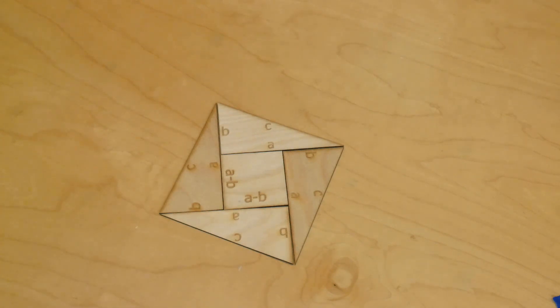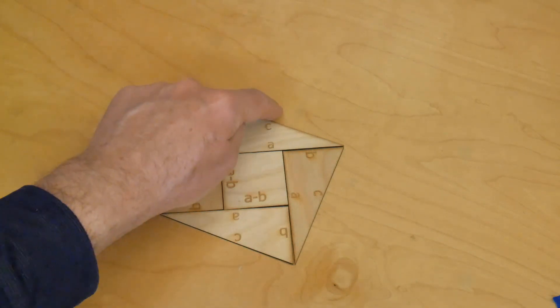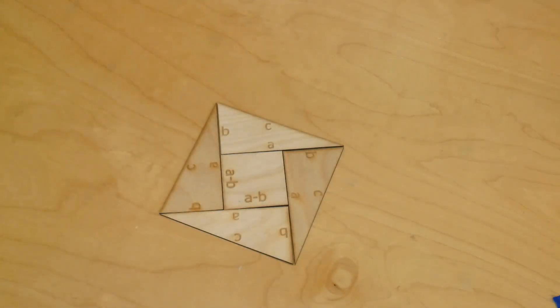Well, this is great, but why does this show the Pythagorean theorem is true? Well, the area of this square is c squared because the sides, the outer sides of the square now are c.